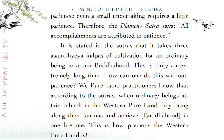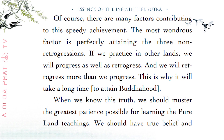We Pure Land practitioners know that, according to the sutras, when ordinary beings attain rebirth in the Western Pure Land, they bring along their karmas and achieve Buddhahood in one lifetime. This is how precious the Western Pure Land is. Of course, there are many factors contributing to this speedy achievement. The most wondrous factor is perfectly attaining the three non-retrogressions. If we practice in other lands, we will progress as well as retrogress, and we will retrogress more than we progress.